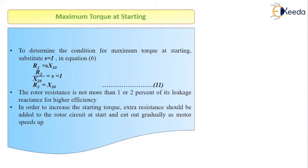To summarize: we studied the condition for maximum torque, then derived the value of maximum torque under that condition, confirmed that maximum torque is independent of rotor resistance while the slip at which it occurs depends on resistance, and also derived the condition for maximum torque at starting. Thank you.